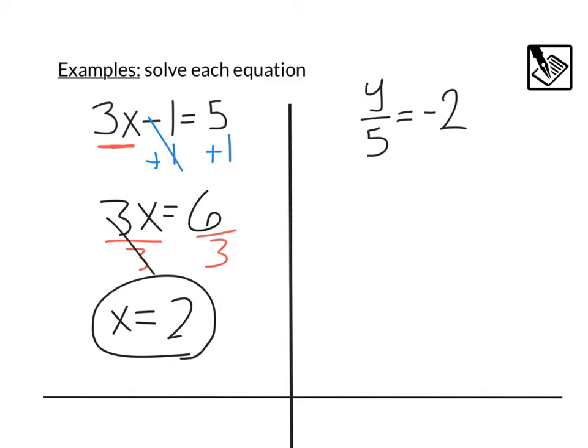Next example, y over 5 equals negative 2. Our variable is that y right in the numerator, which means that that 5 is dividing. So, the opposite of that, I'm going to go multiply both sides by 5, keeping that balance. That's going to leave me with y equals negative 2 times 5, which is going to be negative 10.